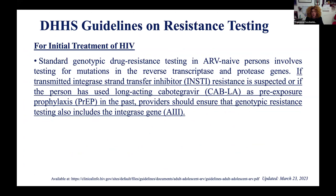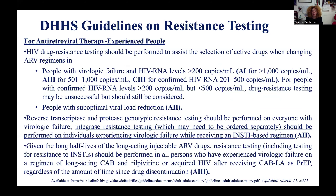In the US, guidelines recommend resistance testing for reverse transcriptase and protease for initial treatment, and integrase gene testing only if resistance is suspected. For virological failure, resistance testing against reverse transcriptase and protease is standard, plus integrase resistance testing whenever there is failure on an integrase inhibitor regimen, as the majority of individuals are now treated with integrase inhibitors, particularly for first-line therapy.